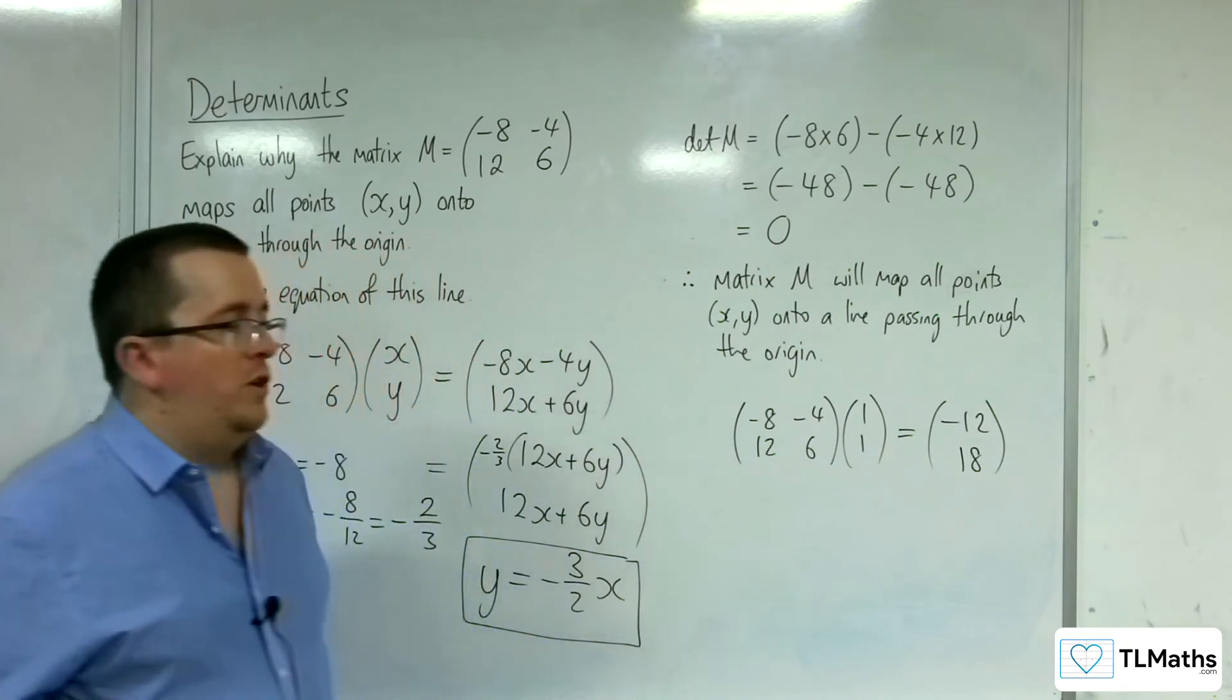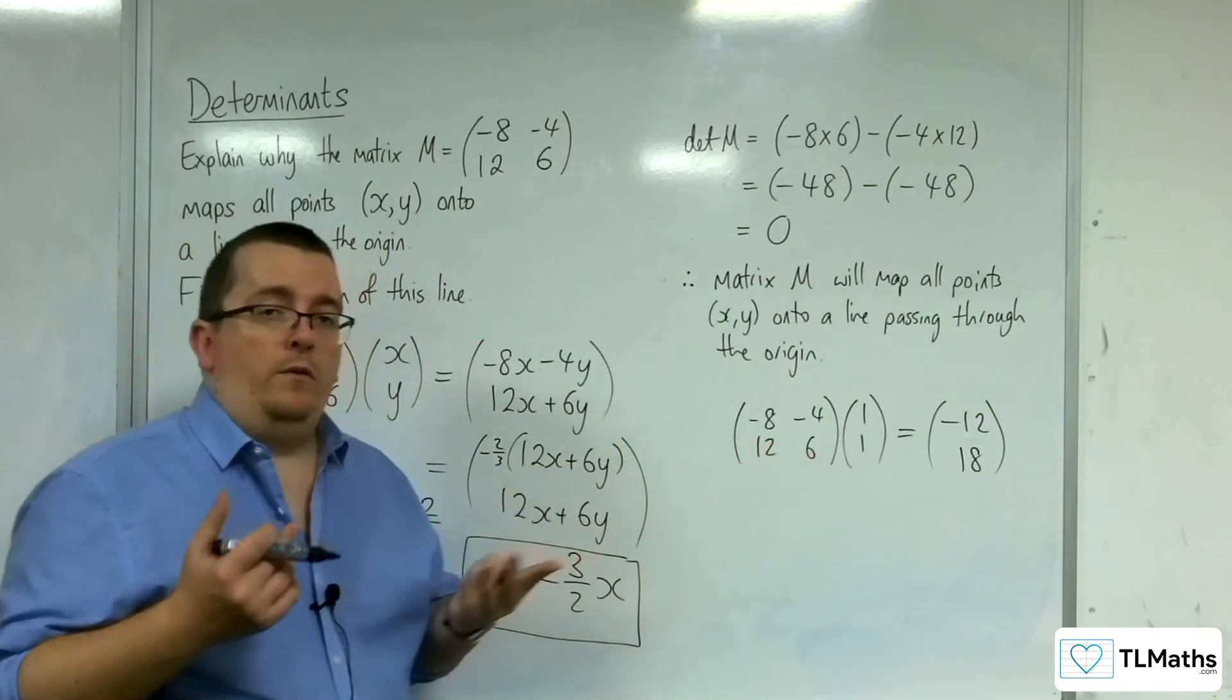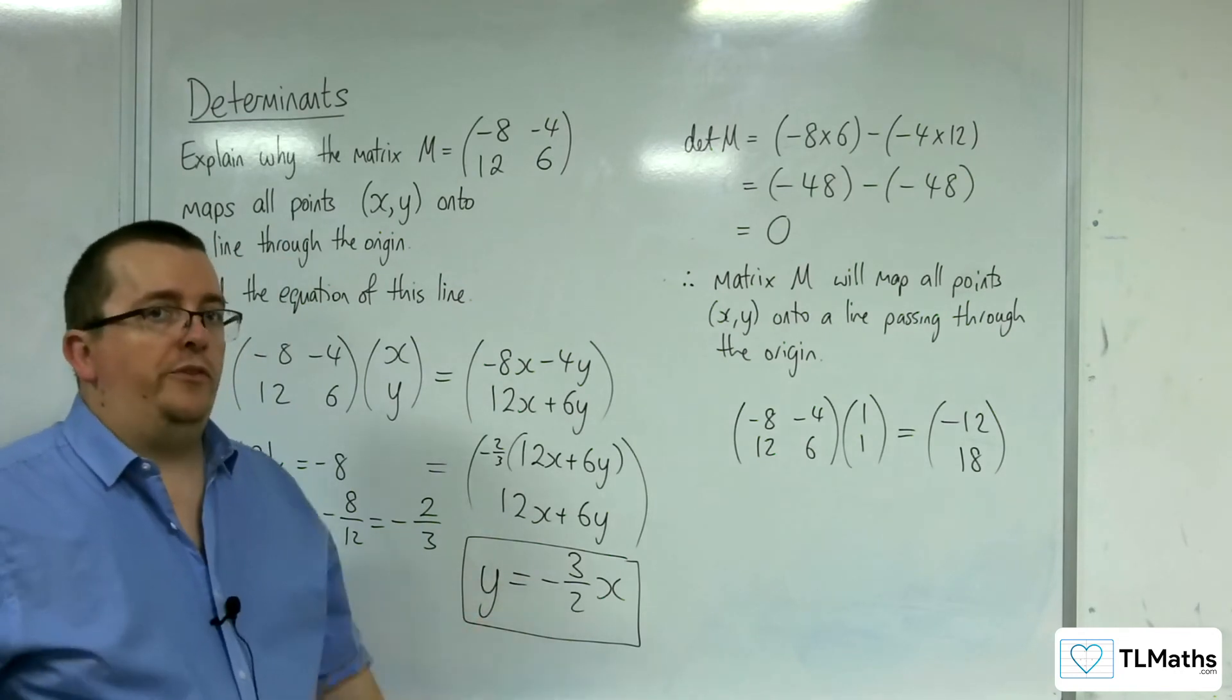So, I know that the coordinate 1, 1 would be mapped to minus 12, 18. Now, for a line, I only need to know two points that it goes through.